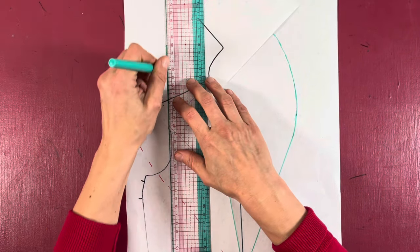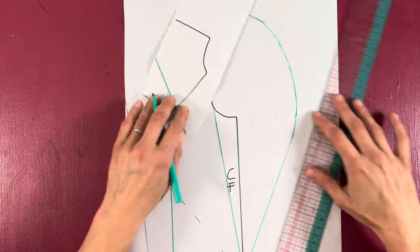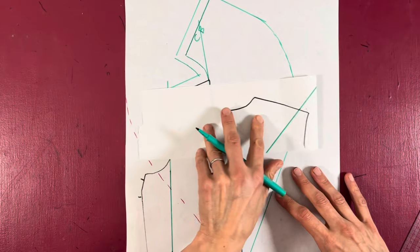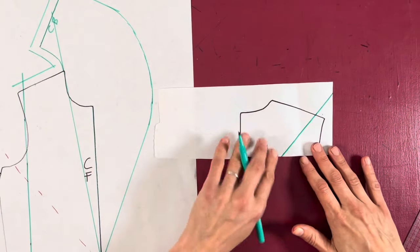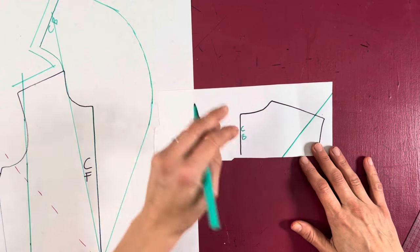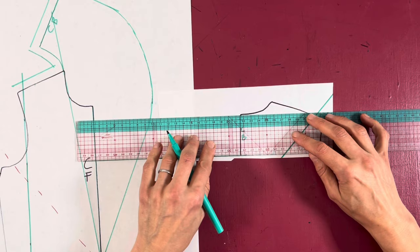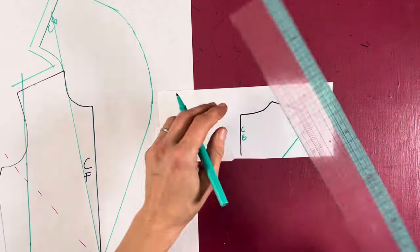work out exactly how wide you want your shoulder to be and what angle you need it to be. And that's a trick you can use whenever you're changing your shoulder. We've now got the shape of our shoulder on the back.